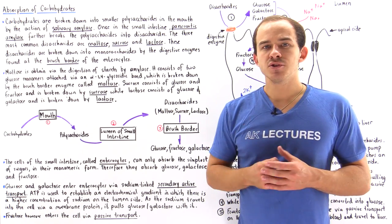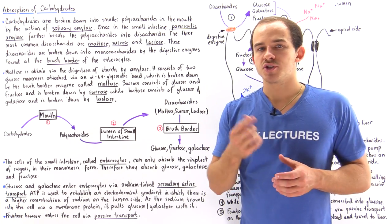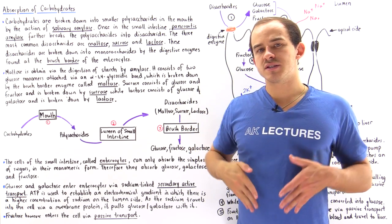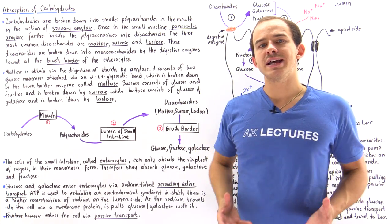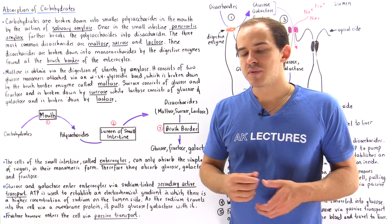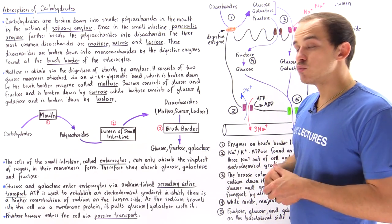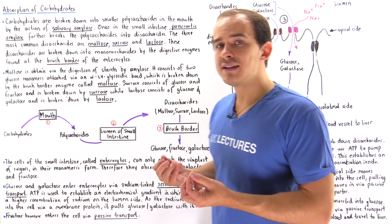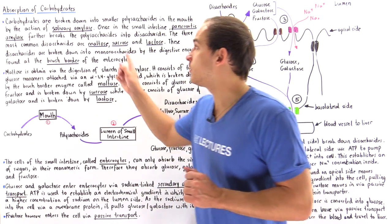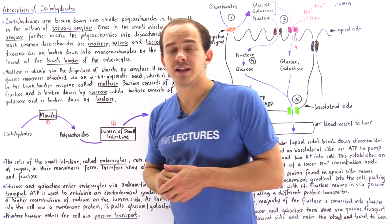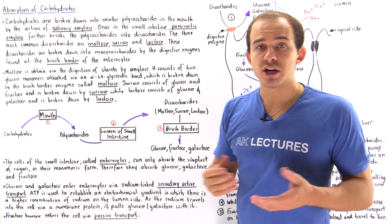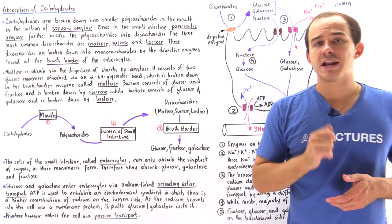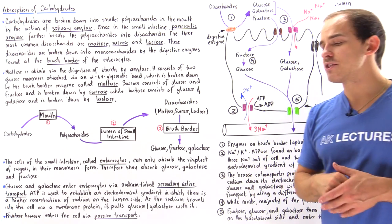Those polysaccharides will travel through the pharynx, through the esophagus, through the stomach, and will enter our small intestine. In the small intestine we have a special type of digestive enzyme that is more powerful than salivary amylase, and this digestive enzyme is known as pancreatic amylase, produced by the pancreas.